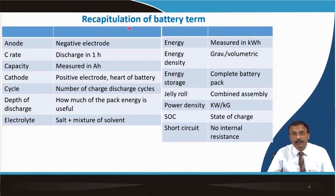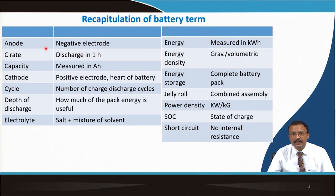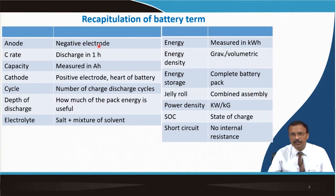Some battery terms are important to remember. Anode or cathode has limited usefulness as fixed labels in battery technology. Usually the anode is the negative electrode and the cathode is the positive electrode, but they change their function while charging and discharging.